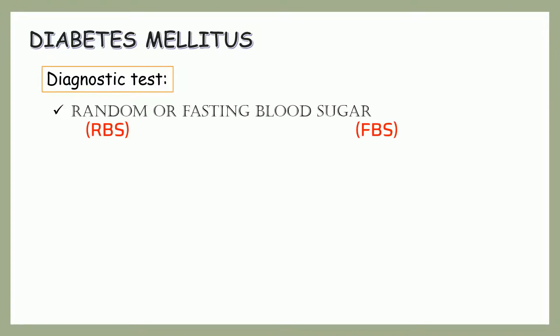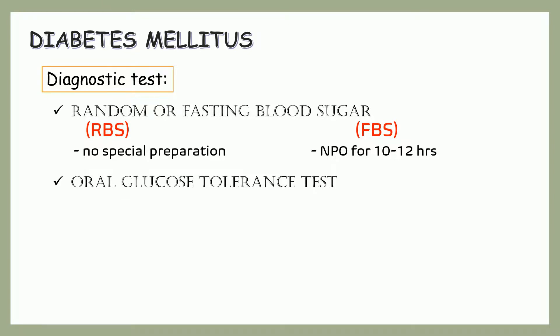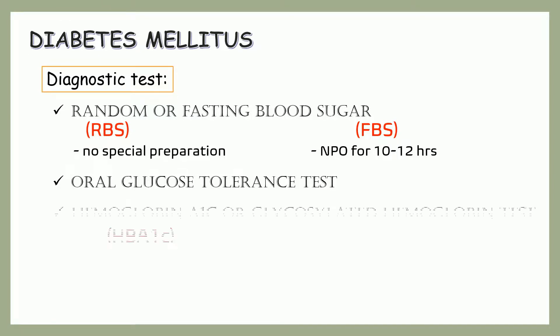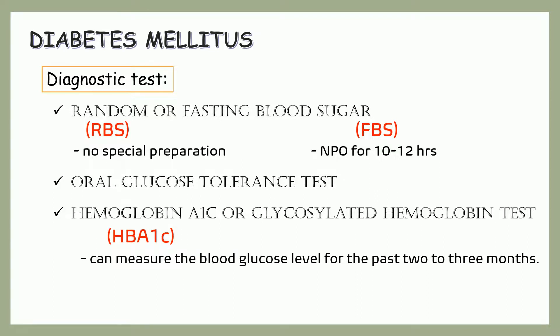For the diagnostic tests, we have random or fasting blood sugar. There is no special preparation for an RBS, but for FBS, we should instruct the patient to fast for at least 10 to 12 hours. Next we have the oral glucose tolerance test, which measures how the cells in your body absorb the glucose after consuming a specific amount of sugar. Finally is the hemoglobin A1c, or glycosylated hemoglobin test. It measures the amount of glucose attached to hemoglobin in the bloodstream and can measure the blood glucose level for the past 2 to 3 months. The normal result is below 5.7%.